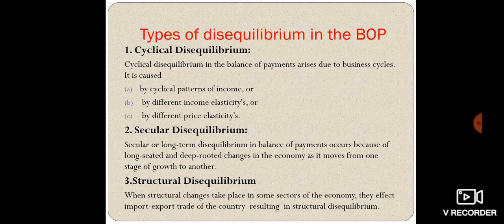Secular or long-term disequilibrium in the balance of payment occurs because of long-seated and deep-rooted changes in the economy as it moves from one stage of growth to another. In the capital account, secular disequilibrium is usually caused by capital account changes. In the long run, if an economy moves from a growth stage to a contraction stage, a deficit balance of payment situation may result. If a country moves from developing to developed status, a surplus balance of payment can be observed.